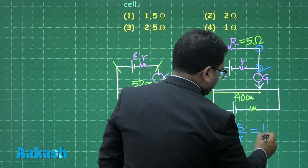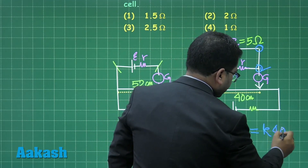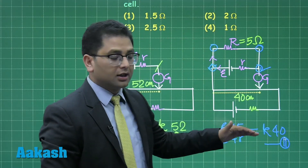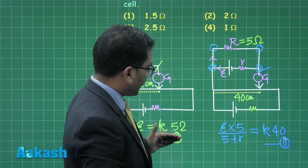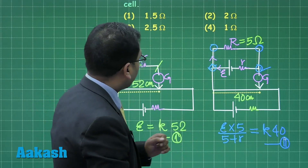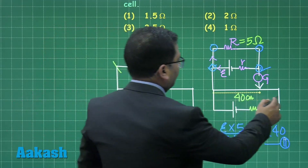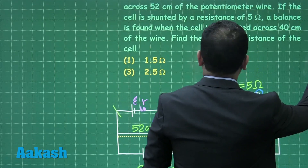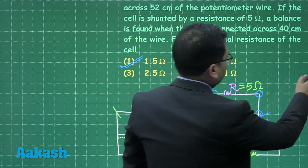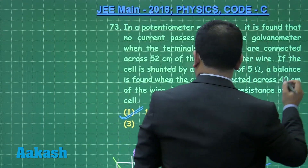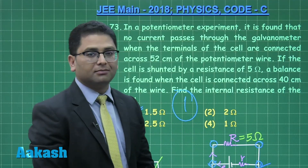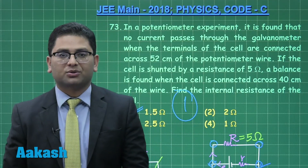The constant k is identical in both cases. Dividing equation 1 by equation 2: e / [e × 5 / (5 + r)] = 52/40, which gives (5 + r)/5 = 52/40. Solving, r = 1.5 ohm. The correct option for question 73 is option number 1.